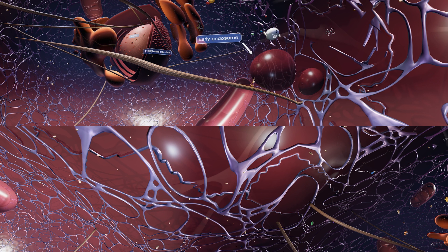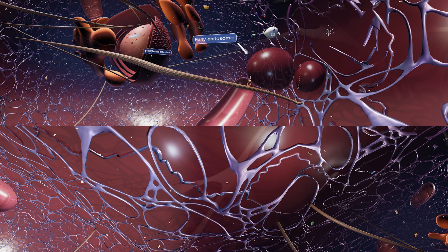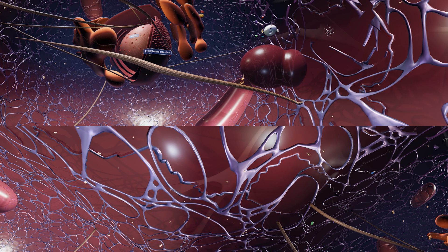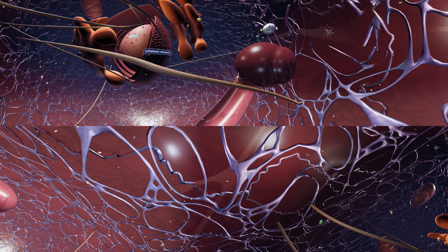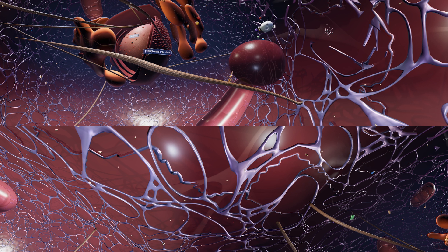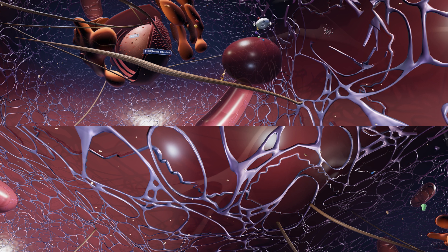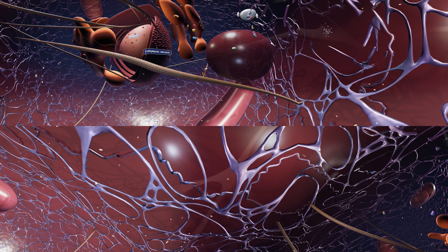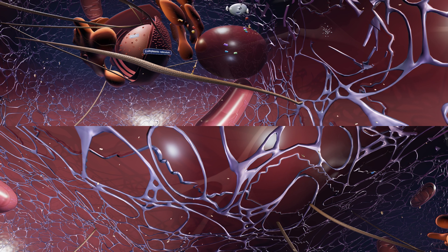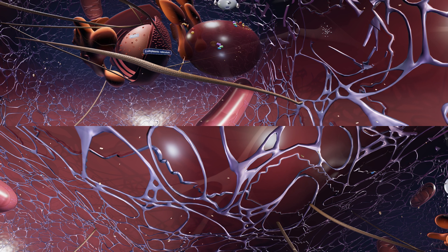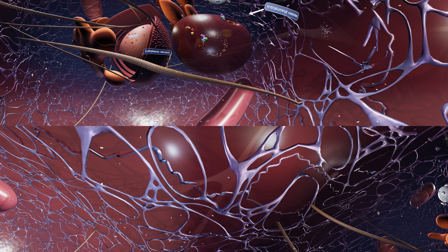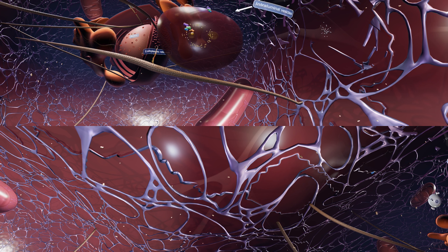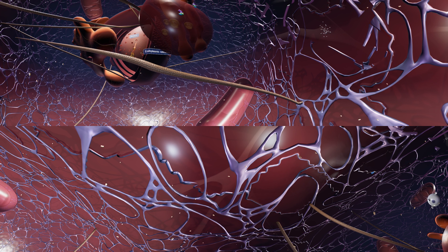These vesicles then fuse with a cell structure called the early endosome. The early endosome moves along special protein tracks and as time passes various specialized proteins bind to the surface. The membrane curves inwardly leading to the formation of smaller vesicles, with various types of cargo sorted into them as they form.